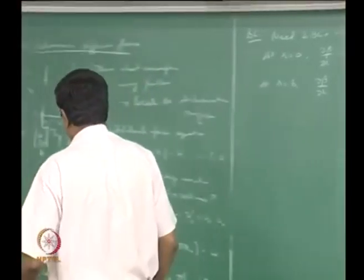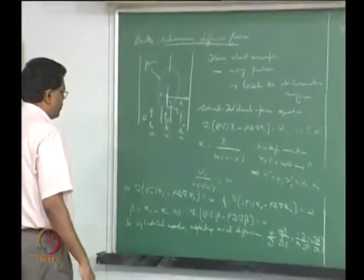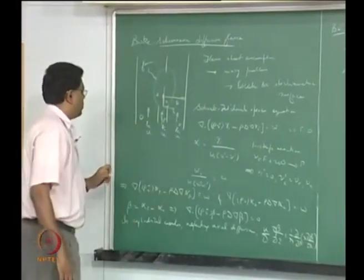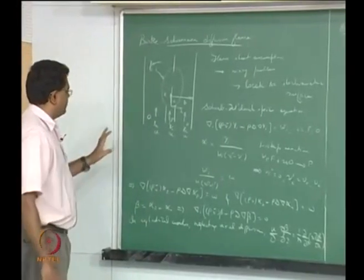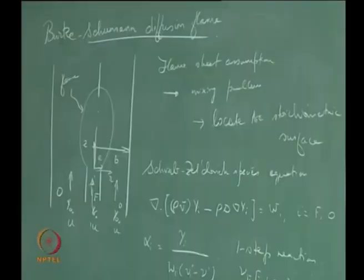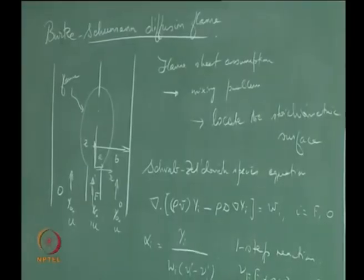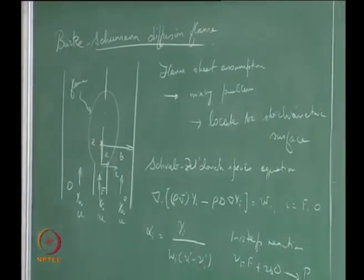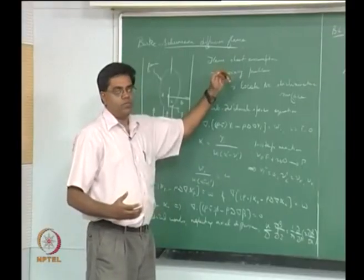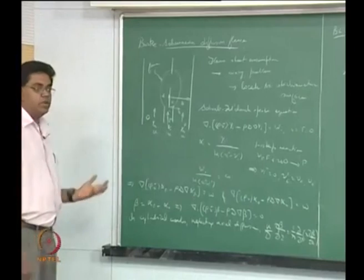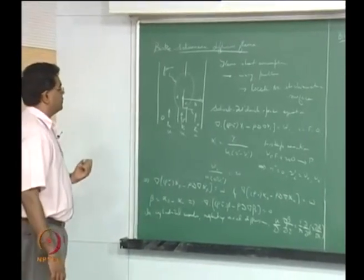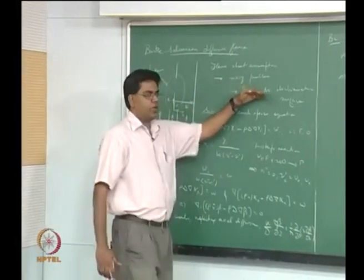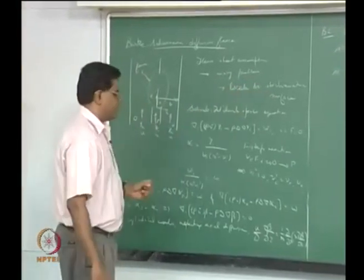Let me go over the gist of what we have done so far. We are making a flame sheet assumption in this problem of co-flowing fuel and oxidizer at the same velocity. The flame sheet assumption is essentially an infinite kinetics assumption, which boils down to the mixing problem. We adopt the 'mixed is burnt' approach, and all we need to do is locate the stoichiometric surface in order to get the flame shape.